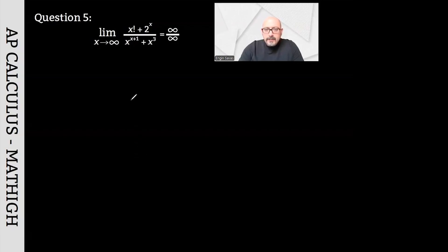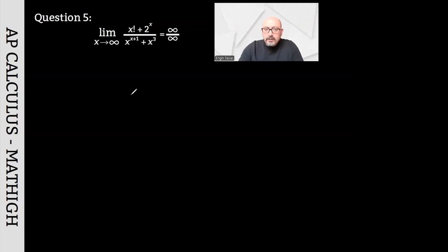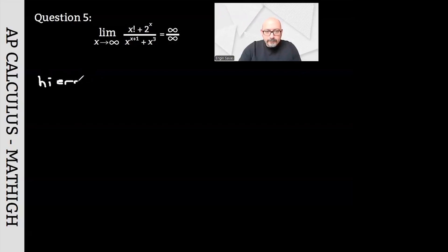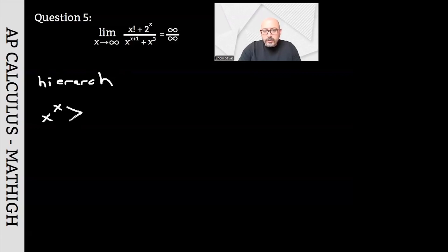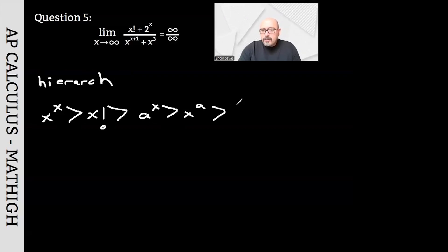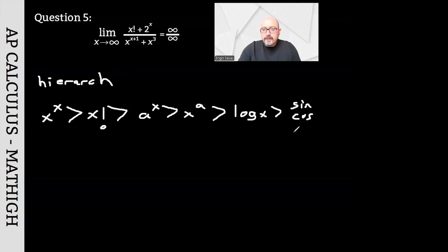In question 5, functions of different types have been given creating the indeterminate form of infinity divided by infinity. If there are different types of functions, you definitely need to know the hierarchy. Which functions are stronger than others in the hierarchy? First, functions where the power is also a function — like x to the x — are the strongest. After that, factorial expressions come next. Then exponential functions, then polynomial functions, then logarithmic functions, and finally trigonometric expressions like sine and cosine.